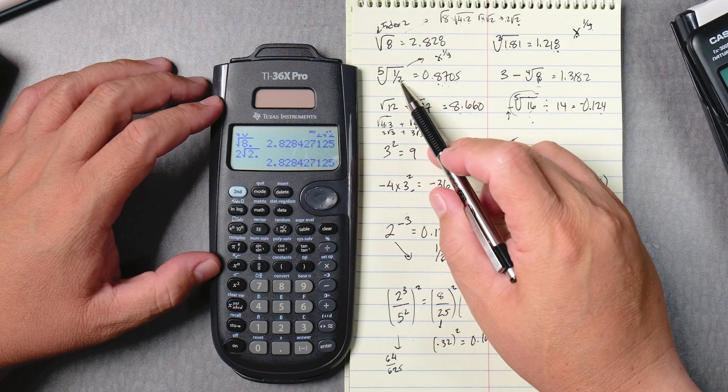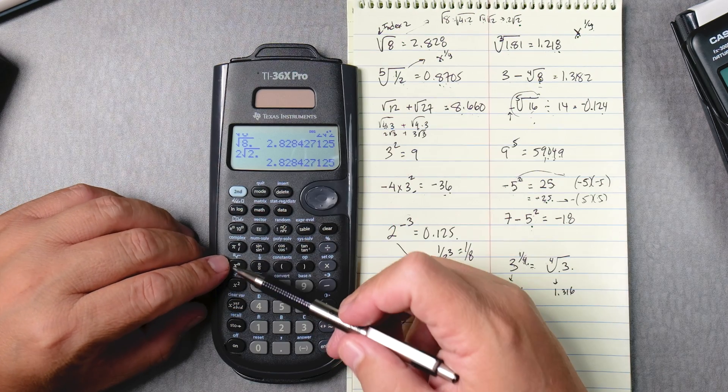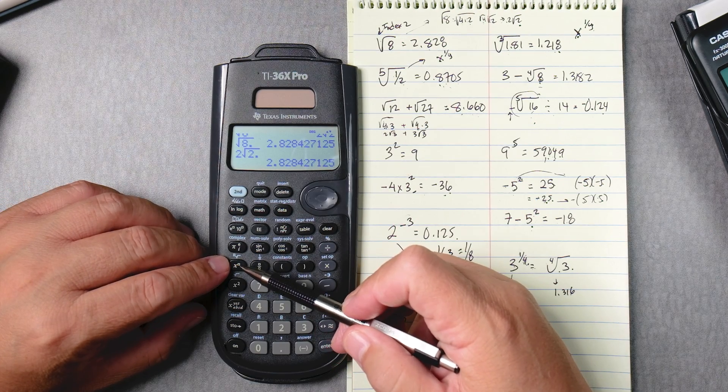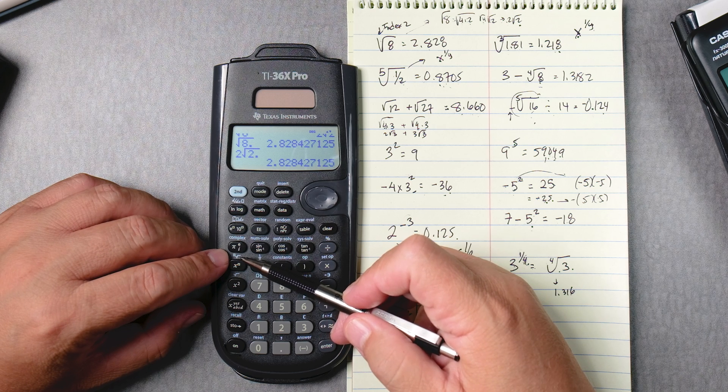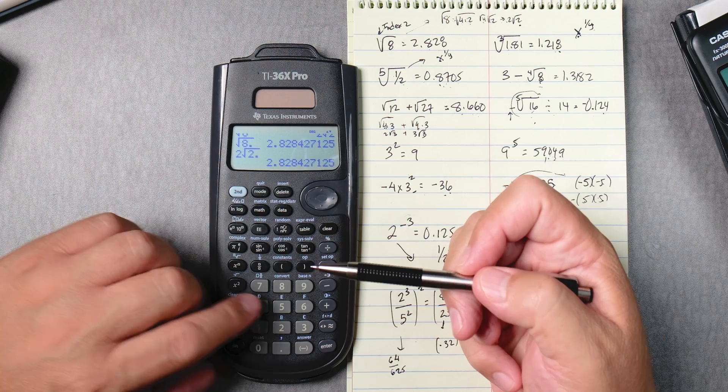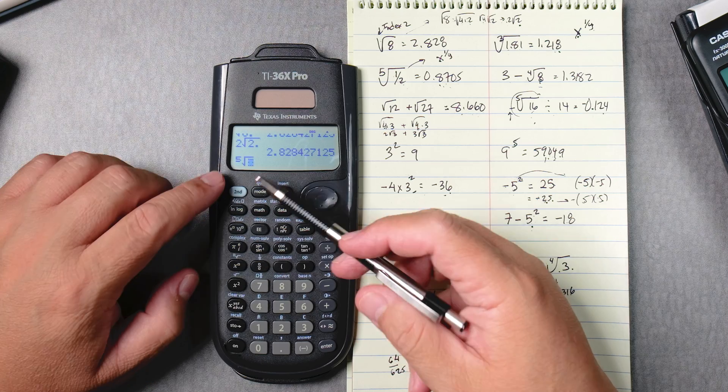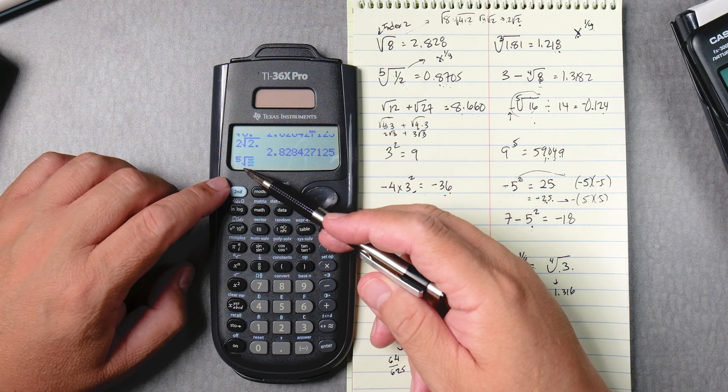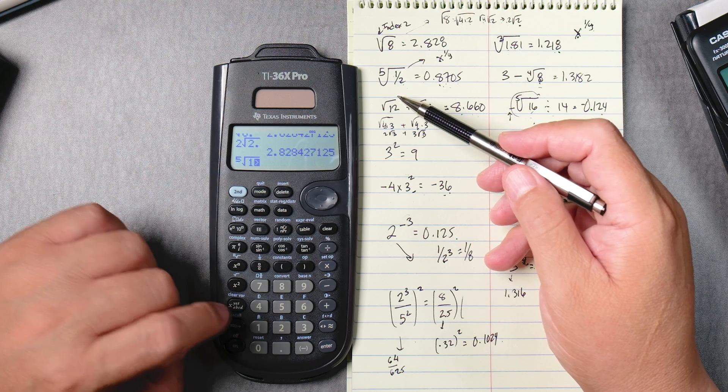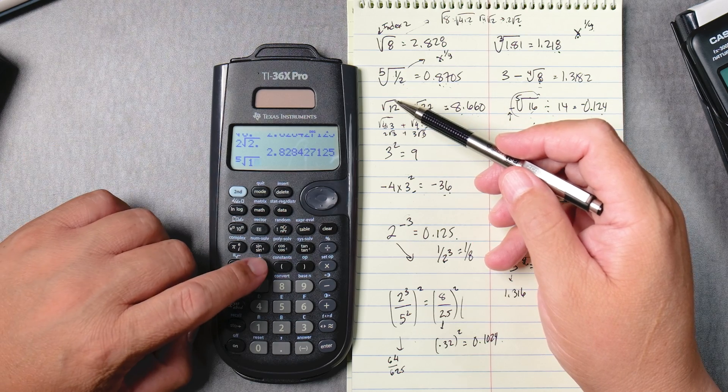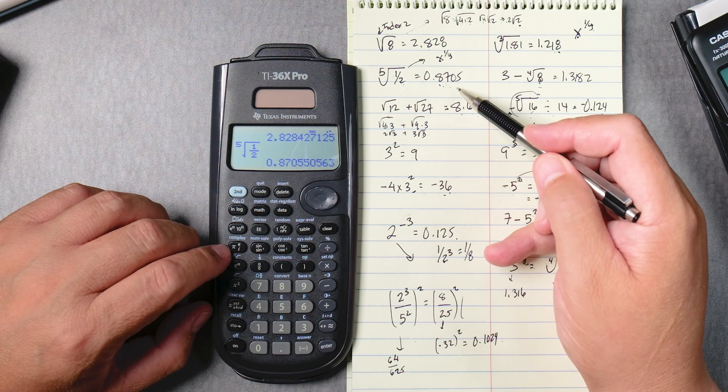Let's do the fifth root of half. To do that, we're going to have an index of 5. If you look at x to the box, on the top is the nth root of a number. So we're going to type in 5 first, second, x to the box, so now that 5 becomes an index, the fifth root of half. So you can type 1, you can use the fraction button, 2, and then enter, and that gives you .8705.